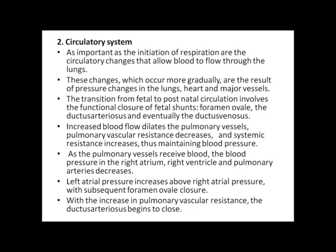The circulatory system: equally important as the initiation of respiration are the circulatory changes that allow blood to flow through the lungs. These changes, which occur more gradually, result from pressure changes in the lungs, heart, and major vessels. The transition from fetal to postnatal circulation involves functional closure of fetal shunts — the foramen ovale, the ductus arteriosus, and eventually the ductus venosus. Increased blood flow dilates the pulmonary vessels, pulmonary vascular resistance decreases and systemic resistance increases, thus maintaining blood pressure. As the pulmonary vessels receive blood, pressure in the right atrium, right ventricle, and pulmonary artery decreases.